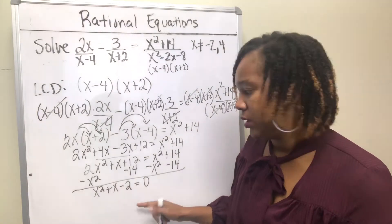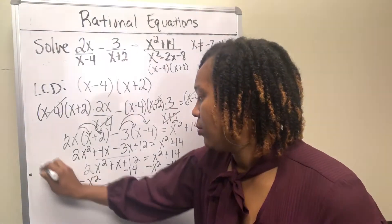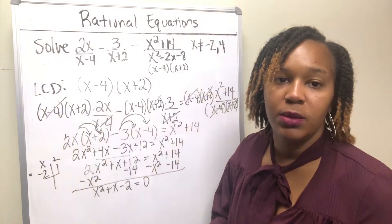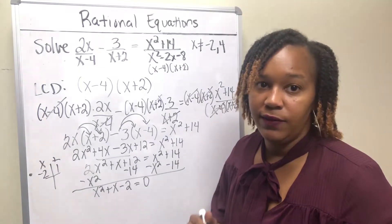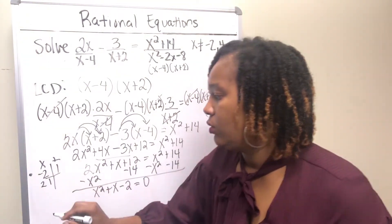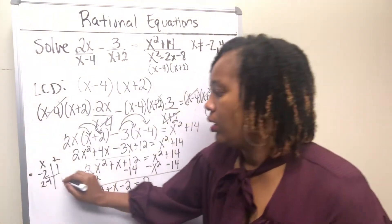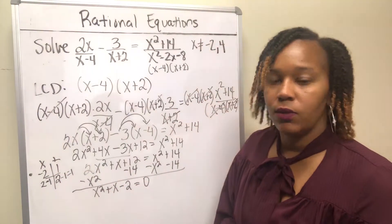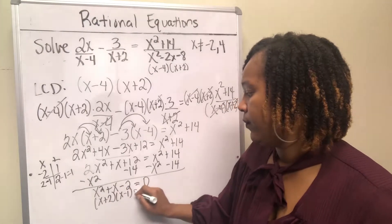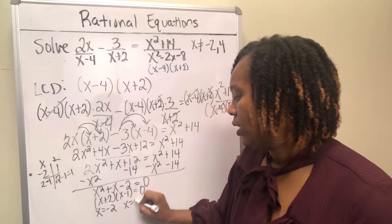Now you have the quadratic equation x squared plus x minus 2 equals 0. It's a trinomial with a leading coefficient of 1, so factor it by taking factors of negative 2 that add to positive 1. Two numbers that multiply to negative 2 and add to 1 are 2 and negative 1: 2 times negative 1 is negative 2, and 2 plus negative 1 is 1. So this factors into (x plus 2)(x minus 1). Setting each factor equal to 0 gives x equals negative 2 and x equals 1 as your two possible solutions.